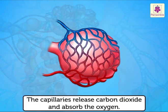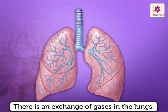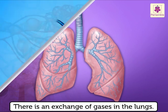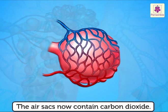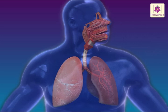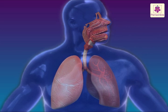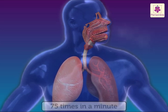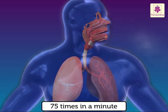As the air containing oxygen reaches the air sacs, the capillaries release carbon dioxide and absorb the oxygen. There is an exchange of gases in the lungs. The air sacs now contain carbon dioxide, which leaves your body as you breathe out. This process goes on continuously. Normally, we breathe about 75 times in a minute.